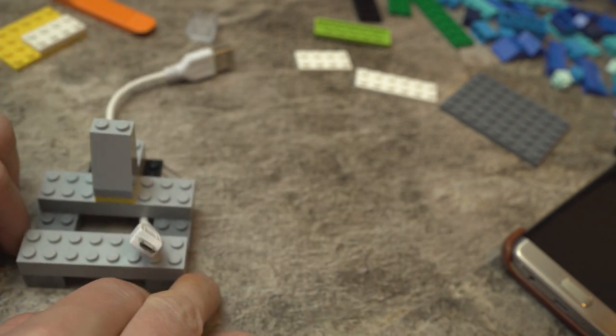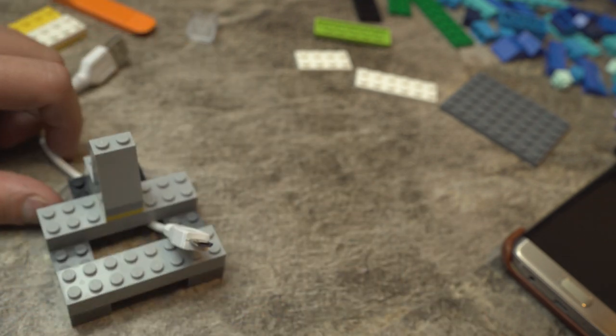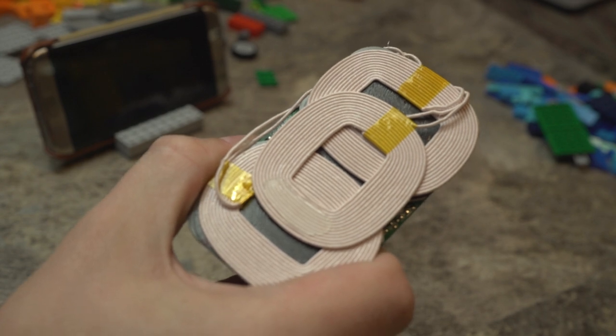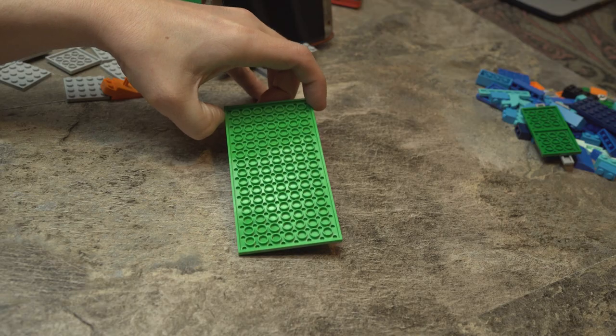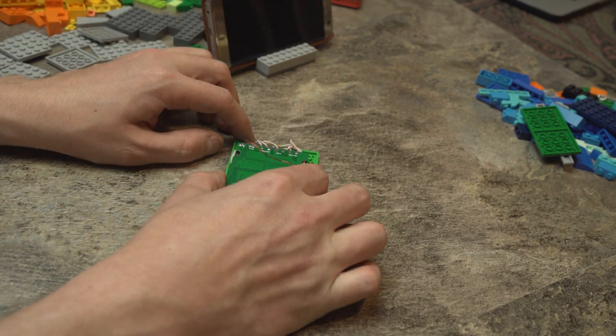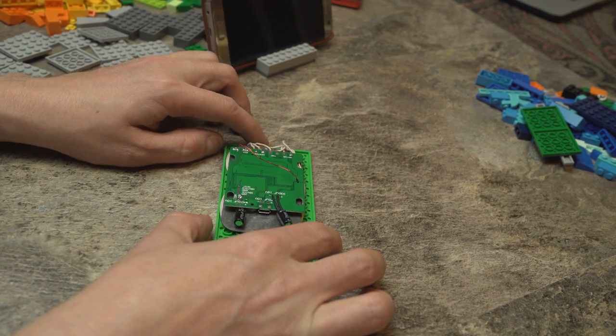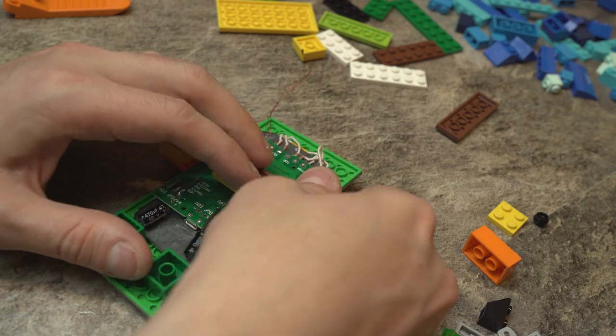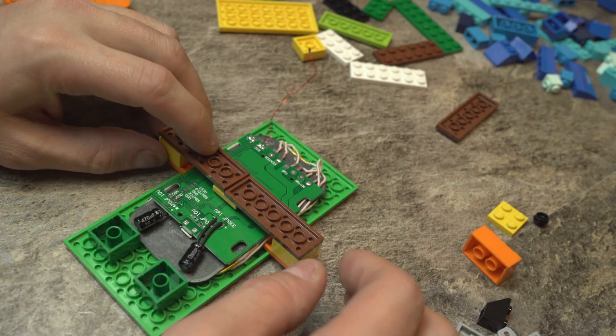Now there is one more thing we can do to really make this unique. Let's go wireless. You're going to need a Qi charging pad to pull this off. Start with a long rectangular base plate and lay the wireless charging pad right on top. Assess the space you have and build around the charging unit to hold it in place. Think of it like making a belt.